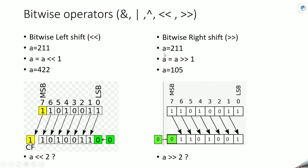Now let's see the right shift operator. In right shift, the bits are shifted towards the right — from MSB to LSB, whereas left shift was LSB to MSB. Here, right shifting 211 by 1 means the rightmost bit is discarded and a 0 is appended on the left, giving us 1101001 in binary, which is 105. You can try right shifting by 2 and see the result.